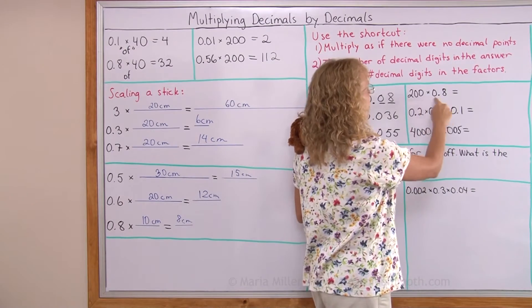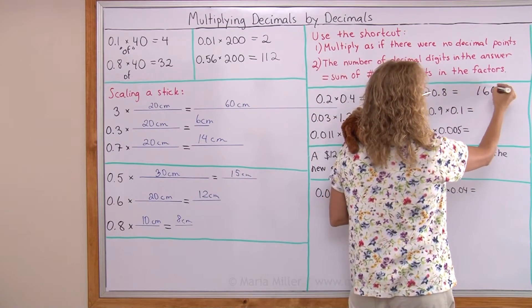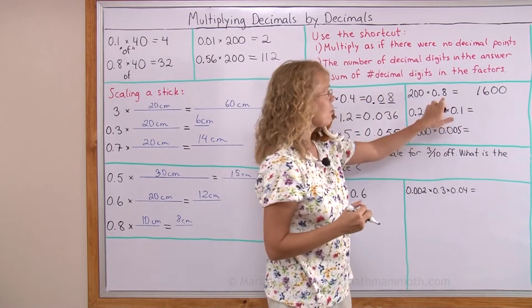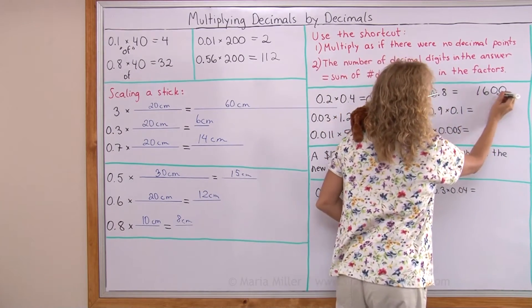Here two hundred times eight is sixteen hundred. And now here's one decimal digit. So one decimal digit here too.